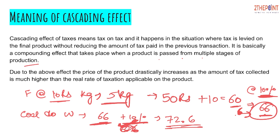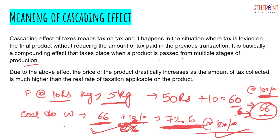When this retailer sells to the end consumer in the market, again a tax of 10% would be levied. So it is a compounding effect — tax on tax, and again tax on an amount which already includes tax that was paid twice. Due to this effect, the price of the product drastically increases as the amount of tax collected is much higher than the real rate of taxation applicable on the product. The taxation rate applicable is just 10%, whereas you are effectively paying 10% three times at three different cost levels.